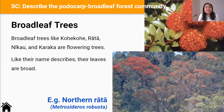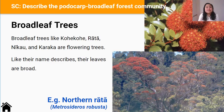Broadleaf trees like Kohekohe, Rata, Niku, and Karaka are flowering trees. They produce bright coloured fruits that birds are attracted to, so this is how their seeds are distributed. And like their name describes, their leaves are broad.